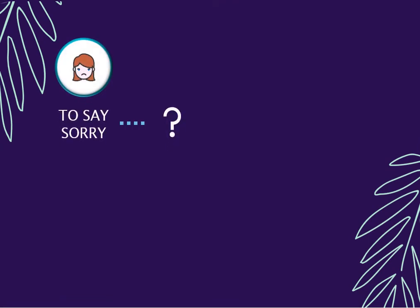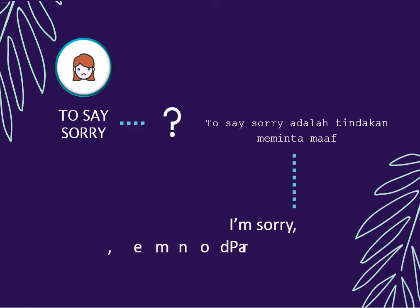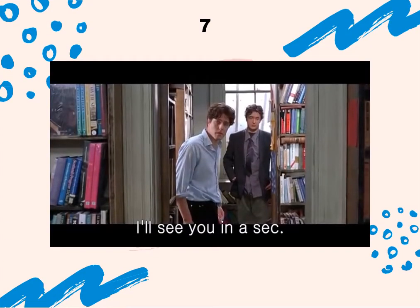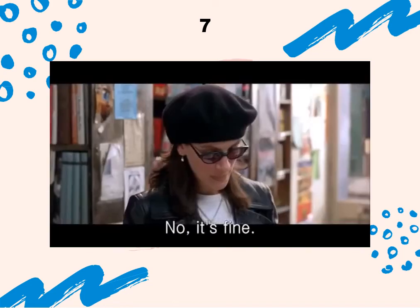Number 4: to say sorry. What is to say sorry? Apa itu to say sorry? Ayo, dari kata sorry saja kalian tahu apa itu arti sorry? Ya, benar — to say sorry adalah tindakan maaf. Apa contohnya? Pasti kalian sering gunakan. Contohnya 'I am sorry'. Apa kata-kata selain I am sorry? Bisa 'pardon me', yang artinya juga sama. Perhatikan video berikut ini. Sorry, Lan. No, it's fine.